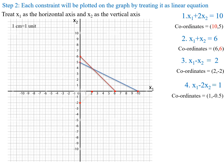We have to extend these lines because x1 and x2 are both greater than or equal to 0. Next mark (1, minus 0.5) on the x1 and x2 axes for the fourth constraint equation and join these points to give the line for the fourth constraint. We also extend this line because x1 and x2 are both greater than or equal to 0.